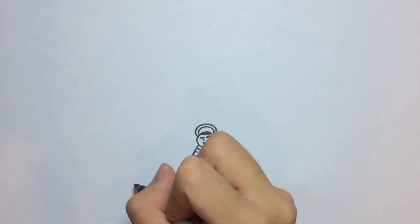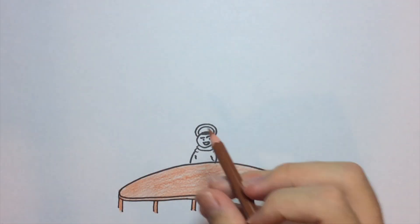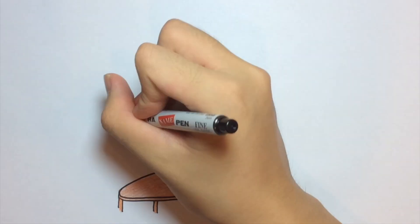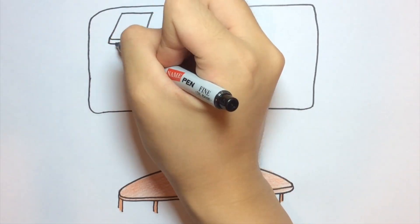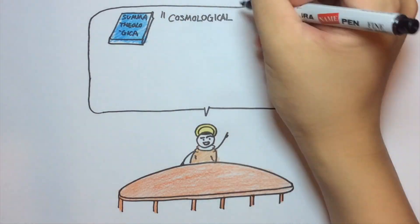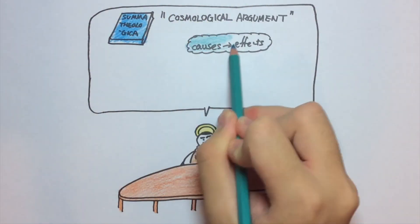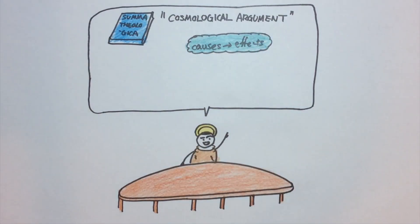To begin the debate, St. Aquinas, who is for the existence of God, will now present his cosmological argument. The cosmological argument, which I presented in my book, Summa Theologica, is concerned with the existence of God as necessary, given the chain of causes and effects going on in the universe.